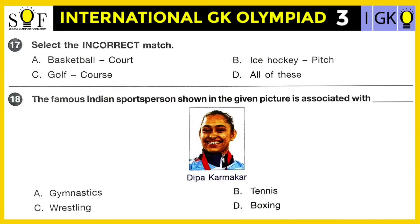Question number seventeen: The famous Indian sports person shown in the given picture is associated with — gymnastics, tennis, wrestling, or boxing? The correct answer is gymnastics. Deepa Karmakar is India's first female Olympic gymnast.